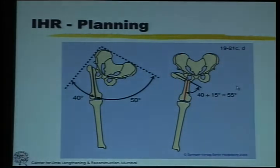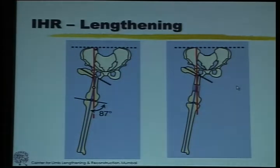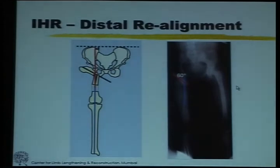This amount of abduction is usually not easy to achieve in conventional pelvic support osteotomy. Then at a mid-diaphyseal level you do the osteotomy and lengthen it. At the end of the lengthening, using hinges, you can realign this osteotomy so that it comes straight and the axis passes through the center of the knee.